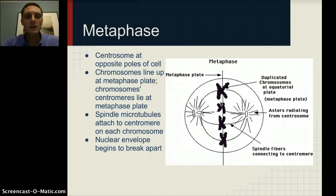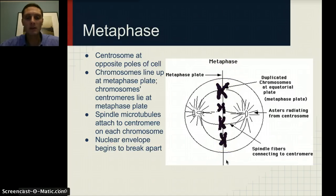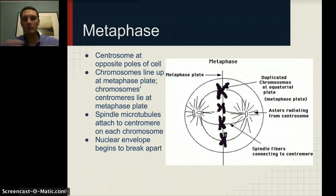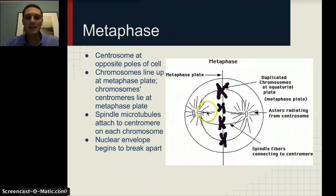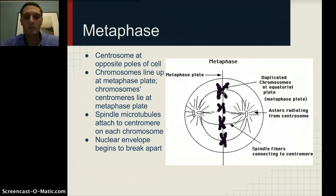In metaphase, the centrosomes are at opposite poles. Our chromosomes have lined up along an imaginary line called the metaphase plate, and at this point they are ready to be pulled apart. The spindle microtubules attach to the centromere on each chromosome, which is what will actually pull them apart. The nuclear envelope is, by this point, totally dissolved.